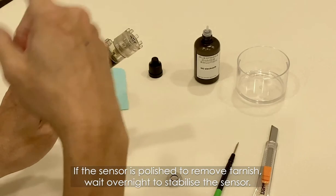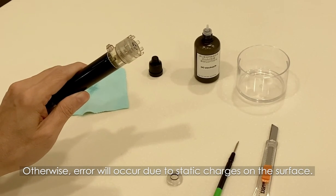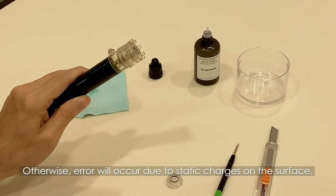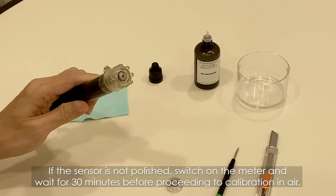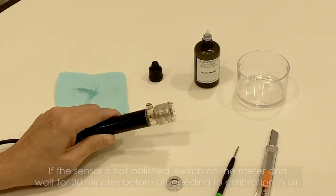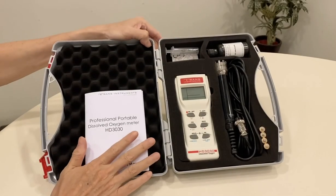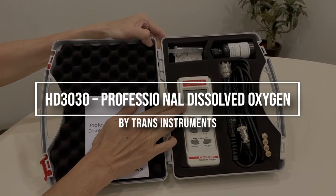If the sensor is polished to remove tarnish, wait overnight to stabilize the sensor. Otherwise, error will occur due to static charges on the surface. If sensor is not polished, switch on meter and wait for 30 minutes before proceeding to calibration in air. That is all for the brief introduction to the HD3030 Dissolved Oxygen Meter.